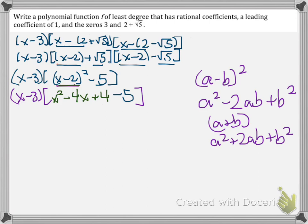Now you simplify. Combine like terms. So 4 minus 5 here. So let's rewrite this. We have x minus 3 times x squared minus 4x minus 1.